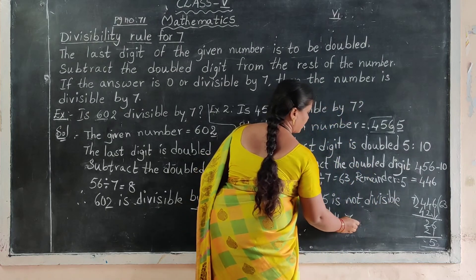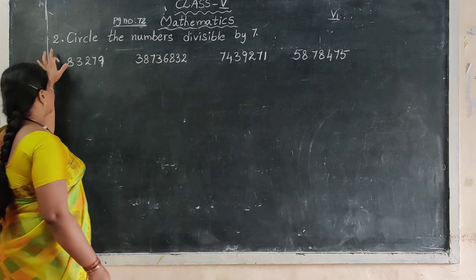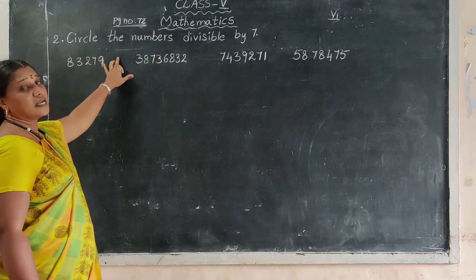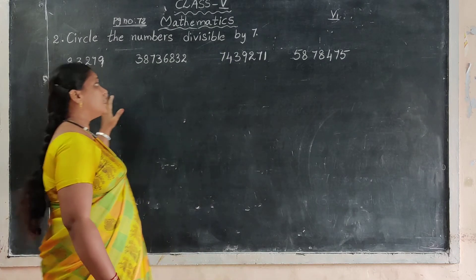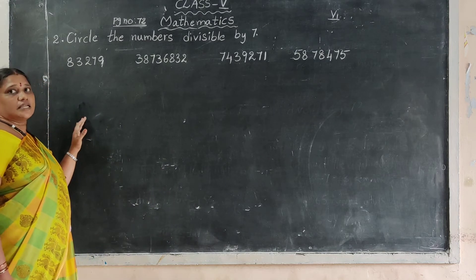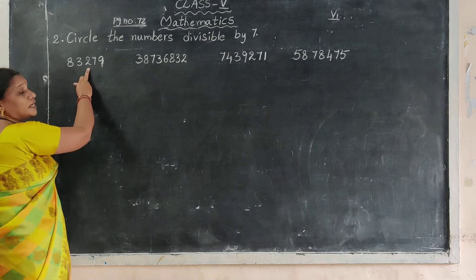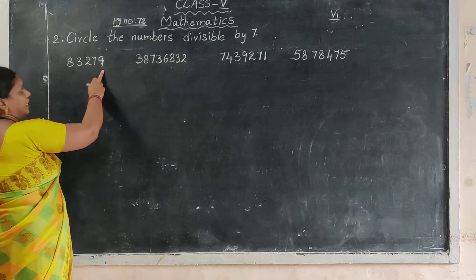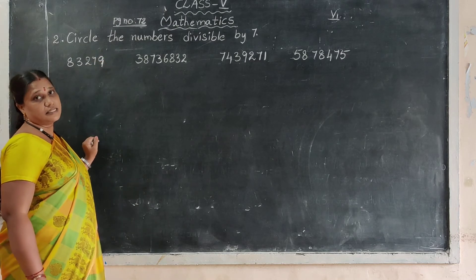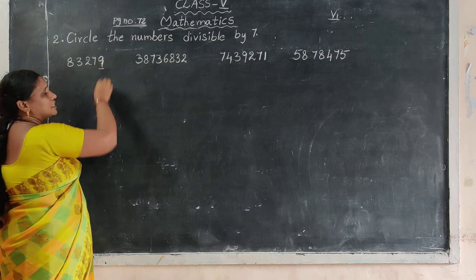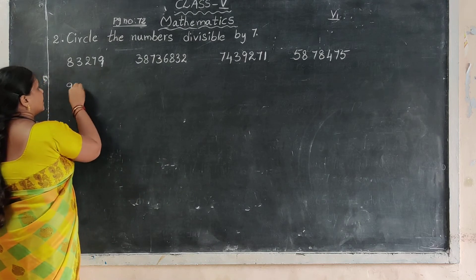Next, page number 72, second row. Circle the numbers divisible by 7. There are many numbers — let's check which ones are divisible by 7. Number: 83,279. Rule is: double the last digit. The last digit is 9; double it: 9 plus 9 equals 18.